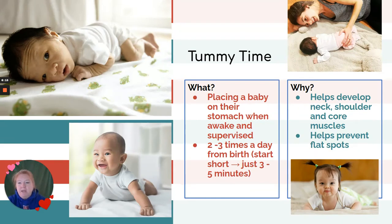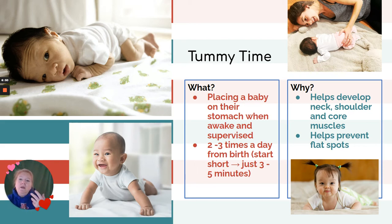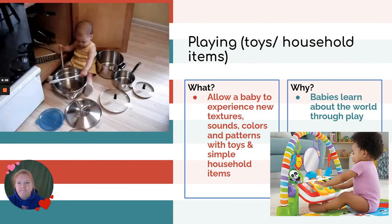There's tummy time: placing the baby on their stomach when they're awake and supervised. When should you start? Literally when you get home from the hospital — two to three times a day from birth. Start short, just three to five minutes. Sometimes babies really dislike it, but keep encouraging it. It helps develop their neck muscles, shoulder muscles, and core muscles, and it helps prevent flat spots by giving them a break from time on their back.